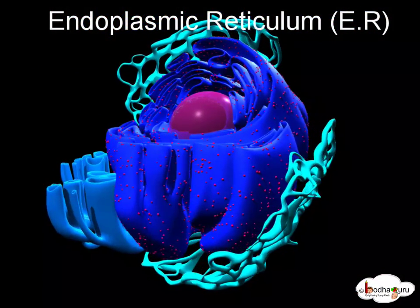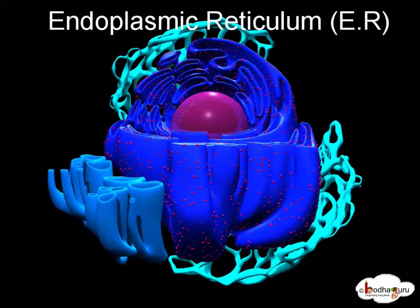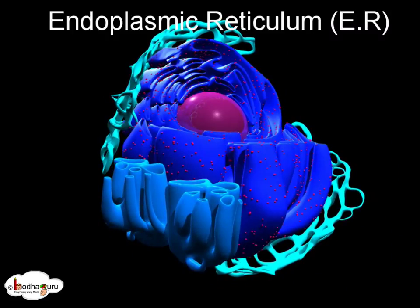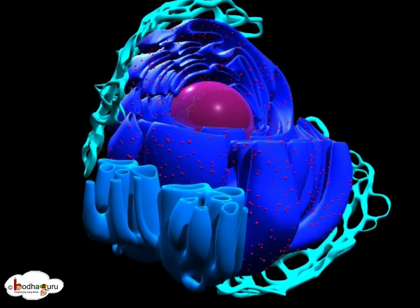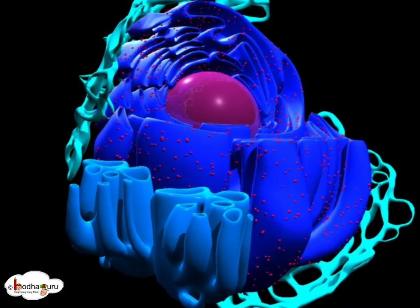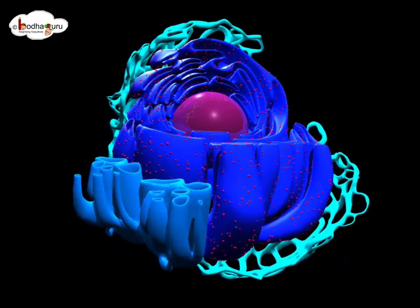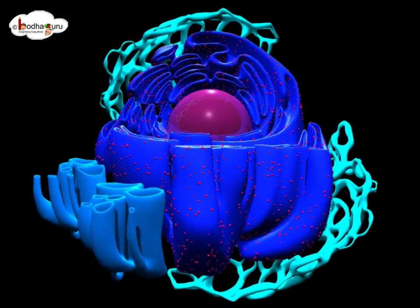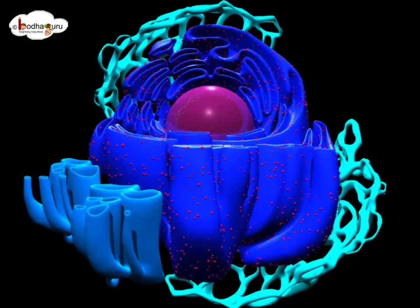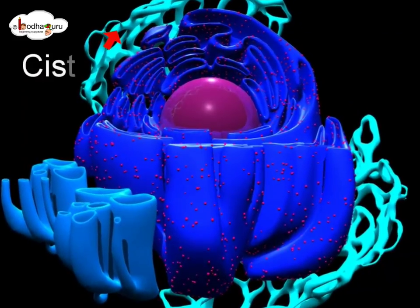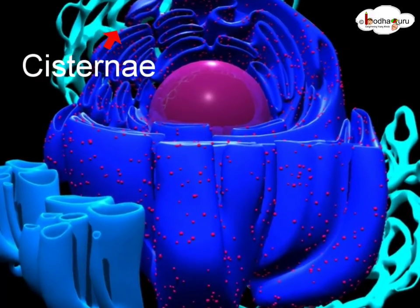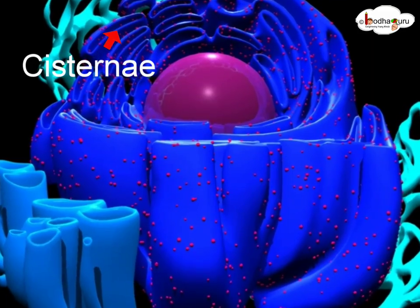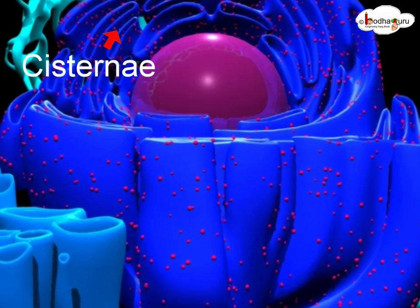The endoplasmic reticulum, in short ER, is a membrane-bound organelle found in eukaryotic cells. The ER forms an interconnected network of flattened, membrane-enclosed sacs or tube-like structures known as cisternae.